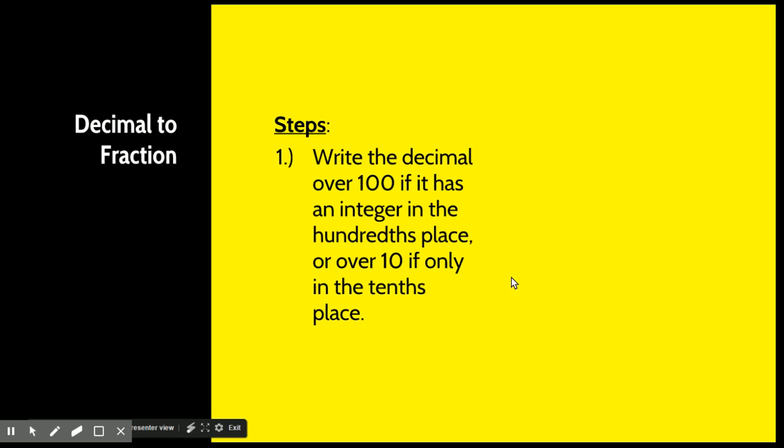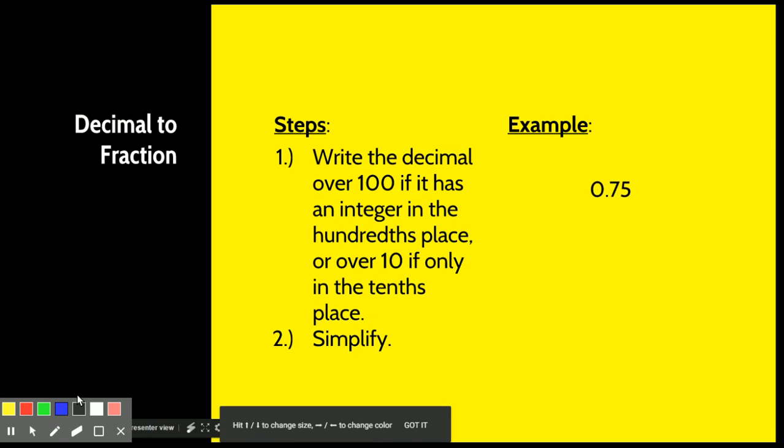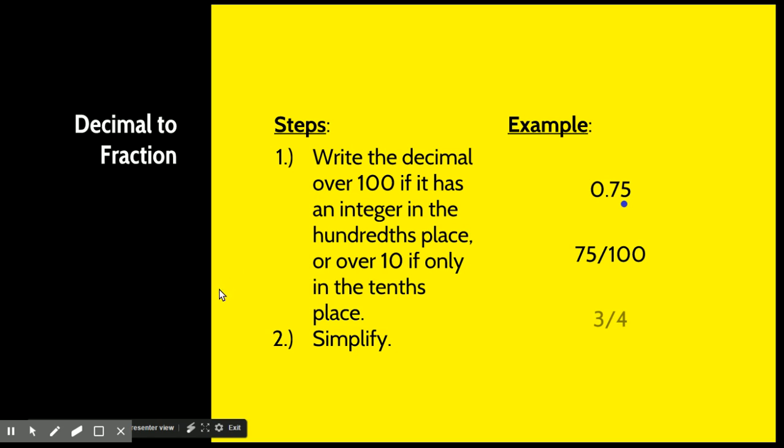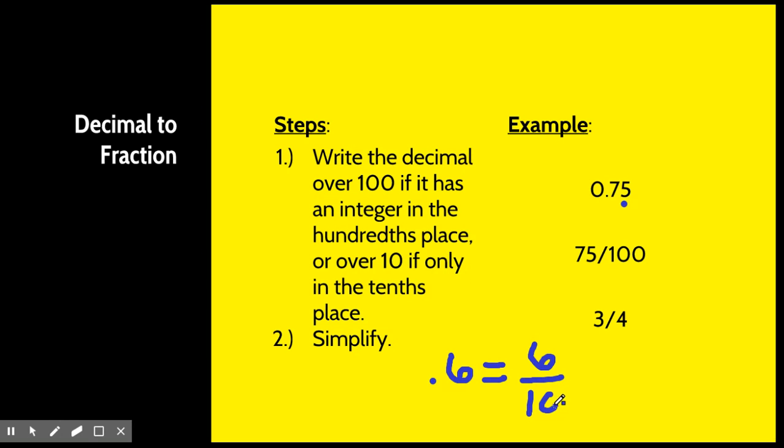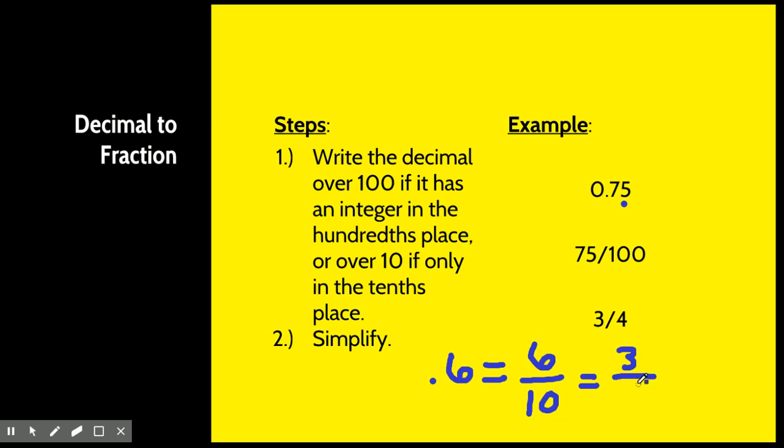And decimal to fraction. In this one, you write the decimal over 100 if it has an integer in the hundredths place, or over 10 if only in the tens place, and then you simplify. So for example, if you look at this problem, you can see that there is a number in the hundredths place. So that means we have to put it over 100. So that becomes 75 over 100, and then we have to remember to simplify, which gives us 3 fourths. Now the other part of that problem said that if it has only one in the tens place, then you need to put it over 10, so say for instance I had something like 0.6, well that is only in the tens place, so that means it's only going to be over 10, and then I would have to reduce, and that would reduce to 3 fifths. So you have to make sure that you pay attention to where that decimal place is, and since this one only has 1 in the tens, it's over 10, but over here this had 1 in the hundredths, so it's over 100.